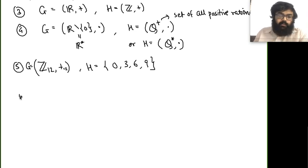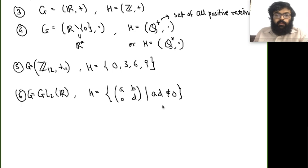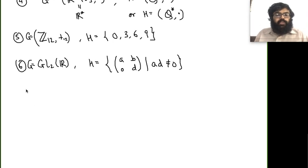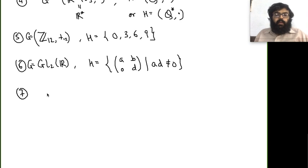For matrices, consider G = GL₂(R), the group of all invertible 2×2 matrices. Let H be the set of upper triangular matrices of the form [a b; 0 d] where ad ≠ 0. This is a subset of G since ad ≠ 0 implies it is invertible, and H is also a subgroup of G. You can verify using the two-property condition.